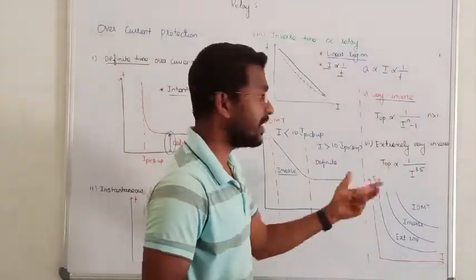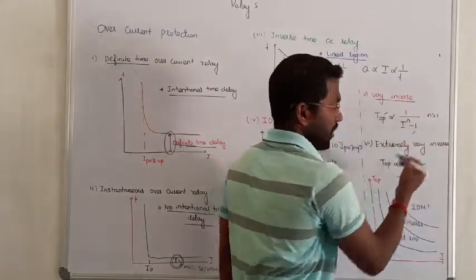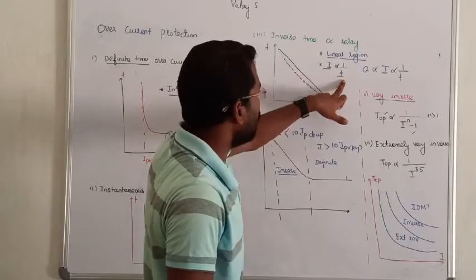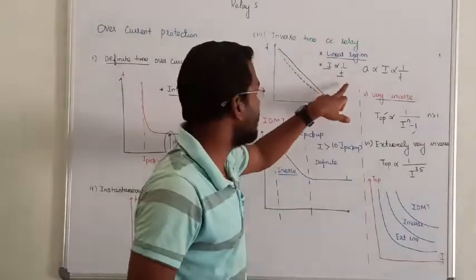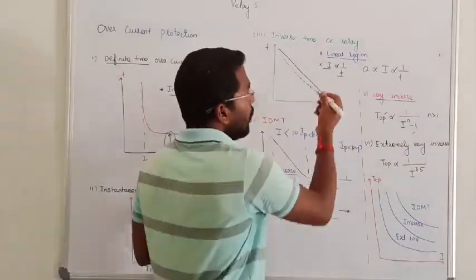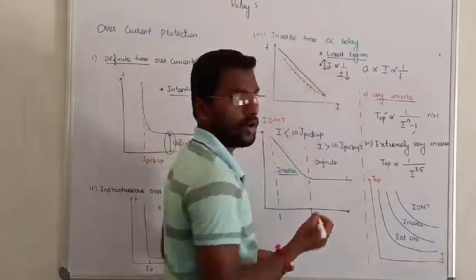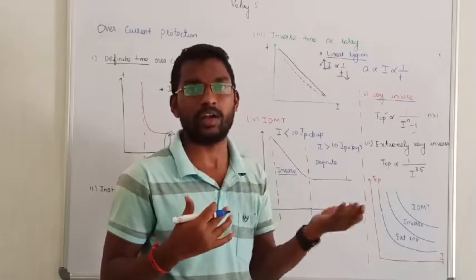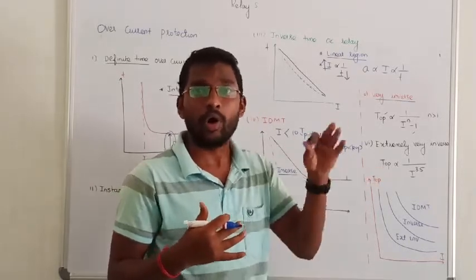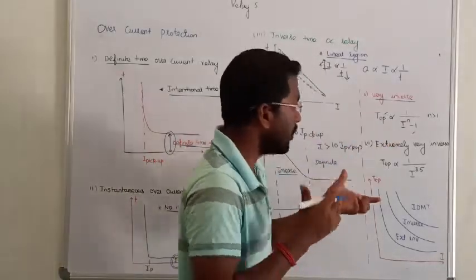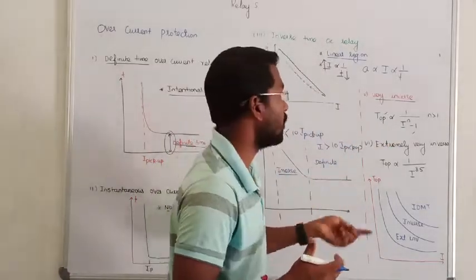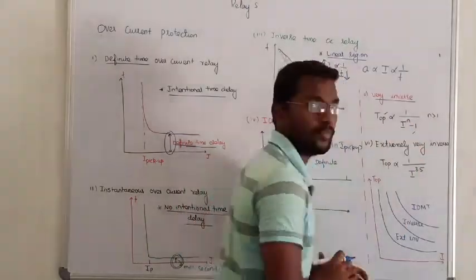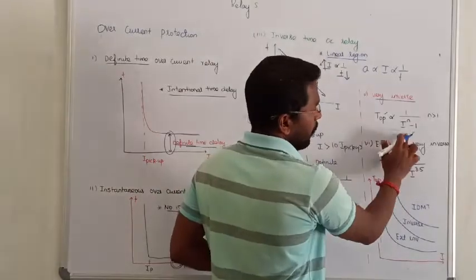Next we are going to discuss about very inverse. Very inverse has a standard relation between time and current — it is directly inverse. If the current value is 40 times over pickup current, it will have a very short operating time. As current increases, operating time decreases, so it will operate faster. Very inverse has a standard relation, with a definite value for n in the practical operating time-current relation.